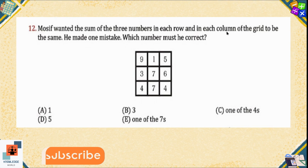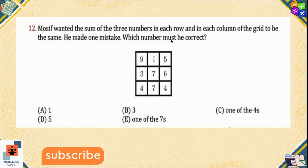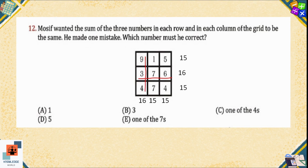Question number twelve: Mosty wanted the sum of three numbers in each row and each column of the grid to be the same. He made one mistake. Which number must he correct? We add all rows and all columns — the total should be 15. There is a problem in the second row and the first column. What is common in both is the number 3, which is wrong. If we replace it with 2, then the total of both the second row and first column will also be 15. Option B is the correct option — he must correct 3 and replace it with 2.